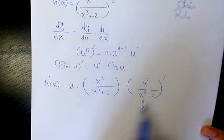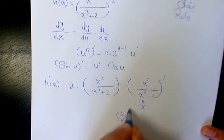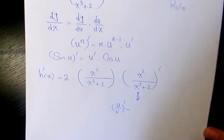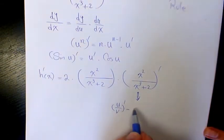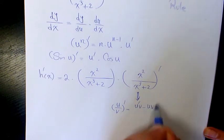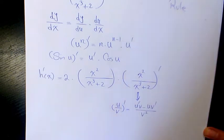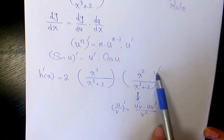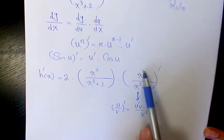For that part we need to use the quotient rule. The quotient rule for u over v states that it equals u prime times v minus u times v prime, all over v squared.